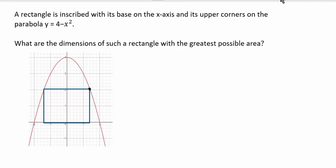Given that the upper right corner is a point on the parabola, I could label this point x comma y. But since y was given to be 4 minus x squared, I could use 4 minus x squared as the y value of that point. So I'm going to write 4 minus x squared here rather than y.